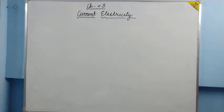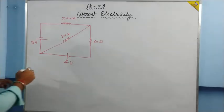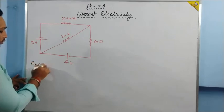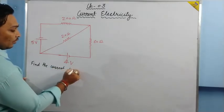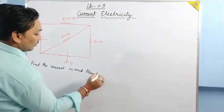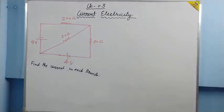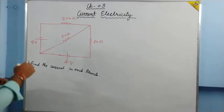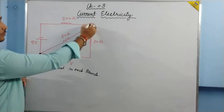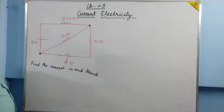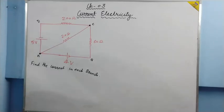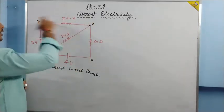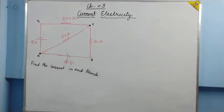The first numerical: a circuit is given and we have been told to find the current in each branch. To find the branches, first find the junctions. One junction is here, one junction is here. This is not a junction — this is simply a turn. Similarly this is not a junction, this is simply a turn. Now let us name the points A, B, C, D. There are basically two loops: ABCA and ACDA.